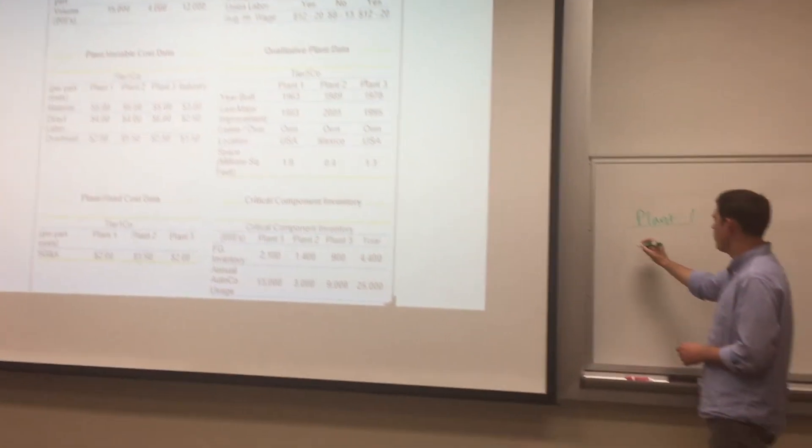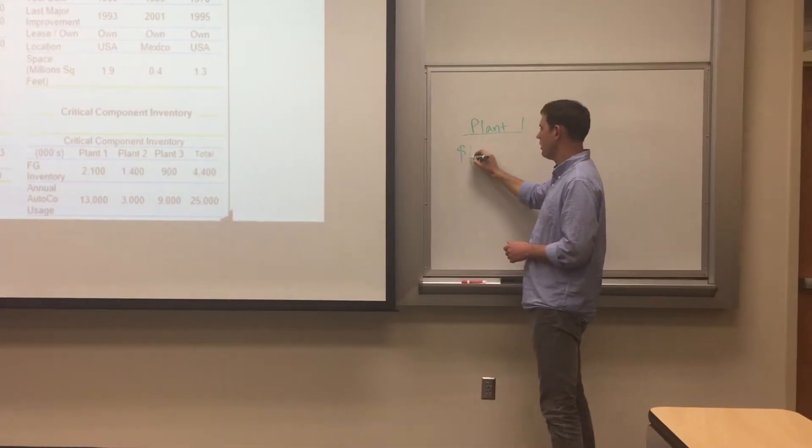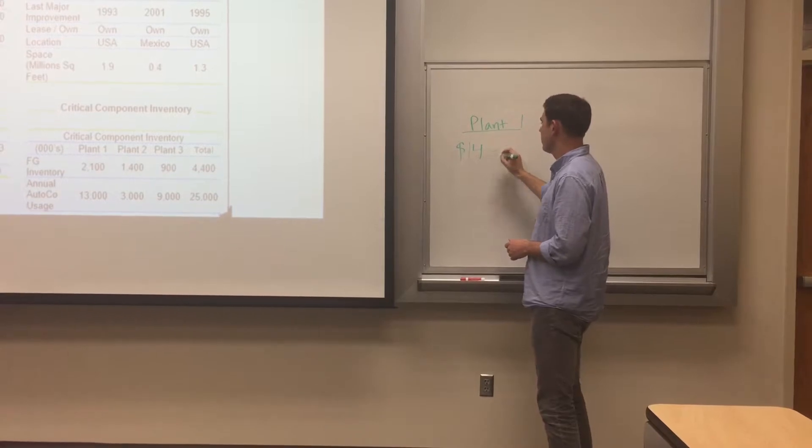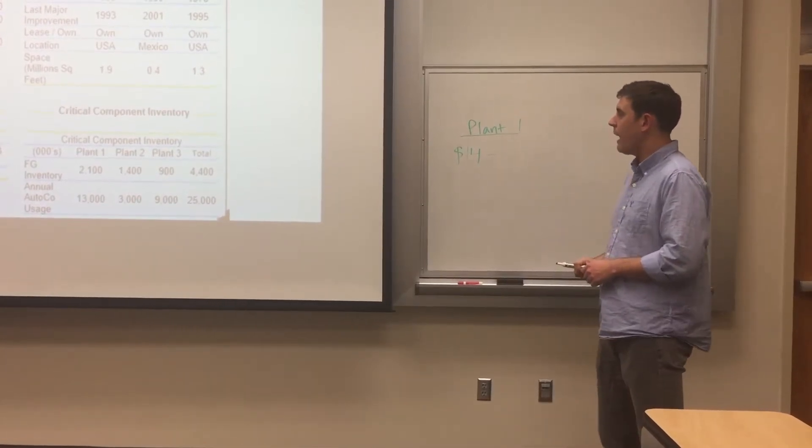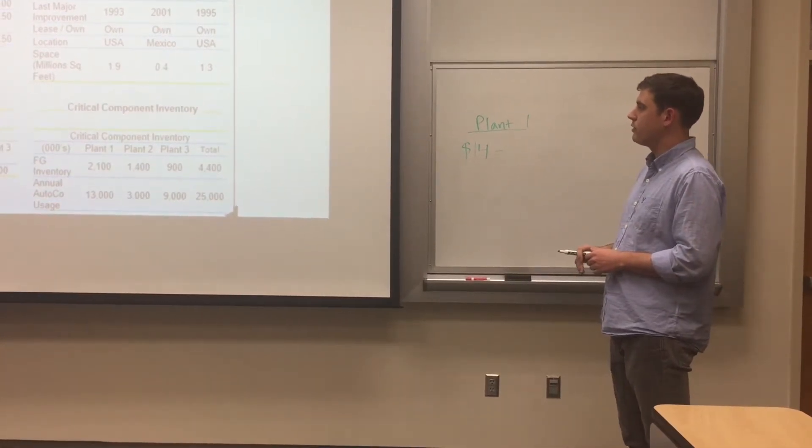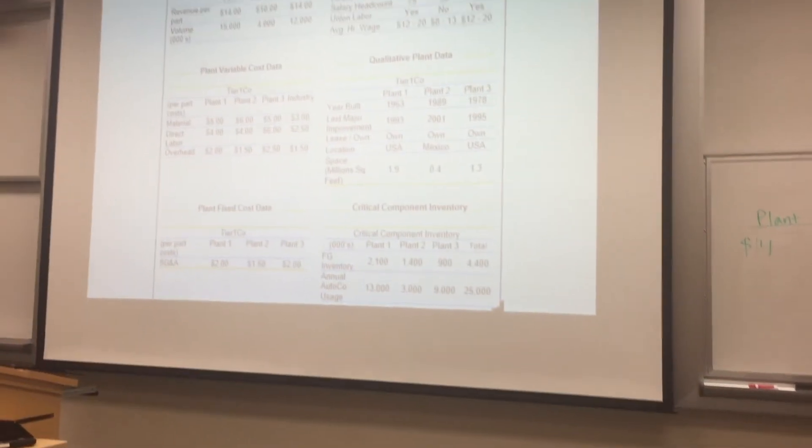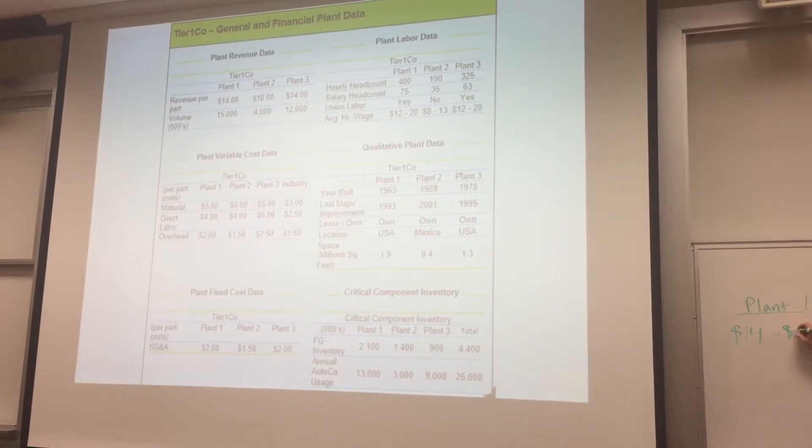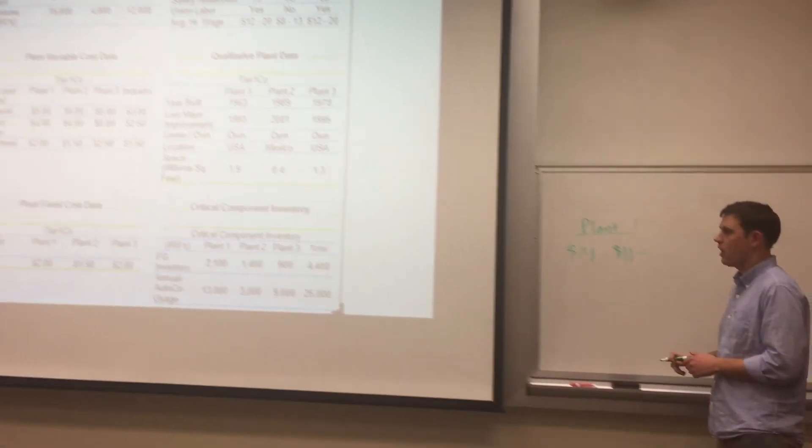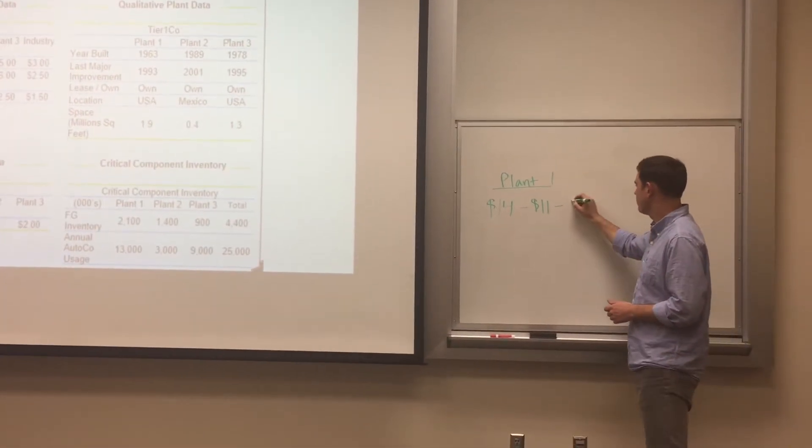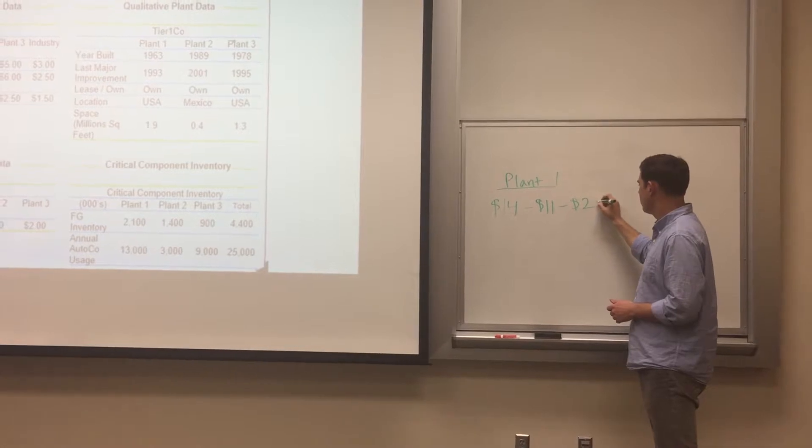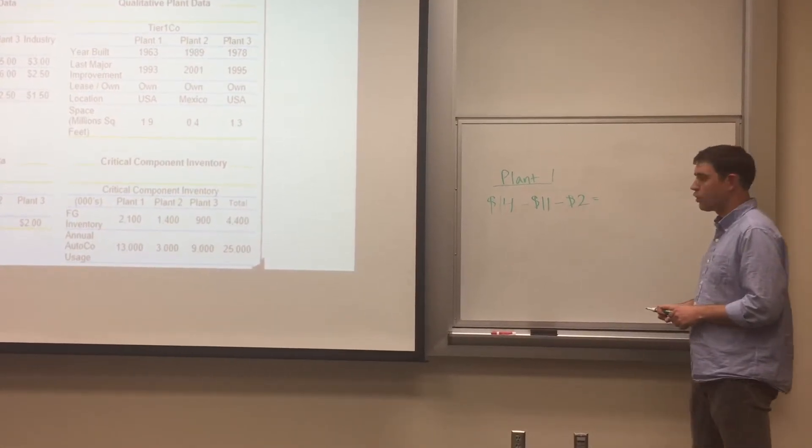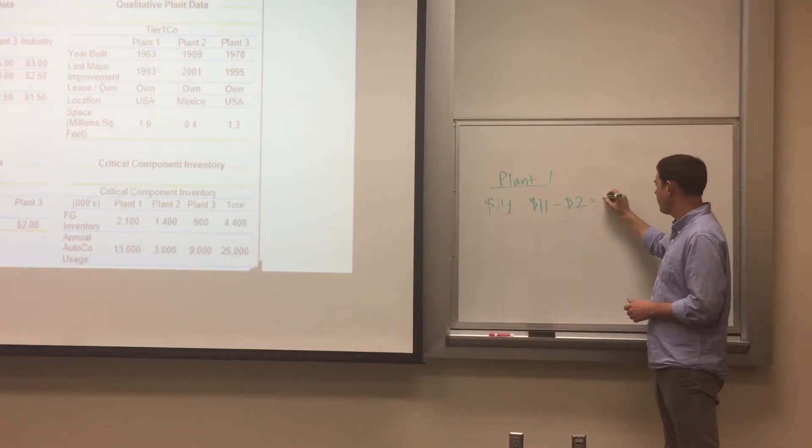So for plant one, we have our revenue per part of $14. Then from that, we would subtract our variable costs, which are $5 plus $4 plus $2, or $11 total. And then our fixed costs, which are $2.